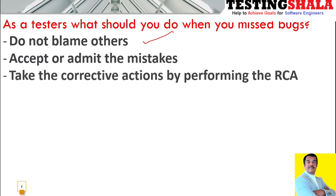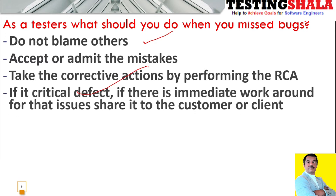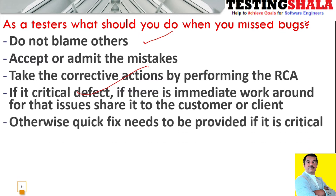Next, is there any correction we can make as part of addressing this mistake? Because if this is causing a major problem to the client, then we should make an immediate course correction. By performing root cause analysis, we should immediately provide a workaround or a fix for the customer if it is a critical defect. That is the first thing we should do as a tester, by talking to the development team.